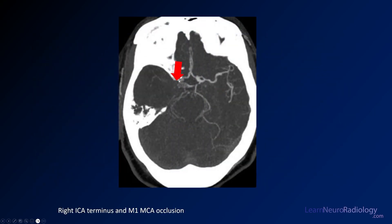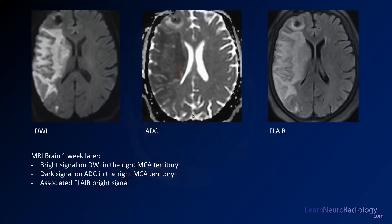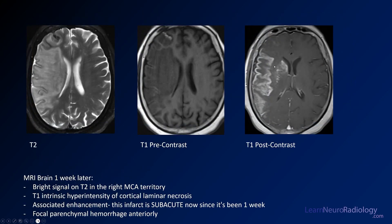On the CTA, you see truncation of the MCA with really no MCA seen on the MIP — confirming occlusion of the right carotid terminus and MCA. The MRI confirms the CT findings: bright diffusion in the MCA distribution, dark on ADC, and bright on FLAIR — very characteristic of an MCA infarct. On post-contrast, gyroform enhancement and enhancement of the caudate and basal ganglia indicate a somewhat older infarct. There's also probably a little hemorrhage in the frontal lobe adjacent to the infarct.